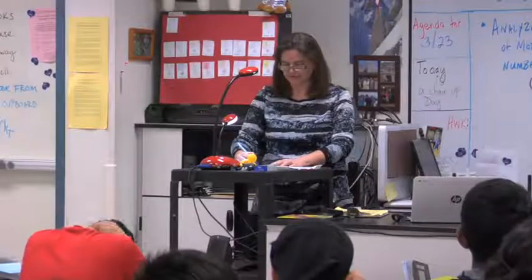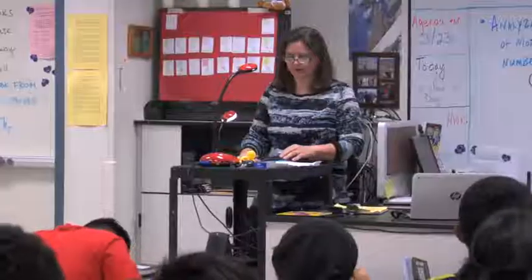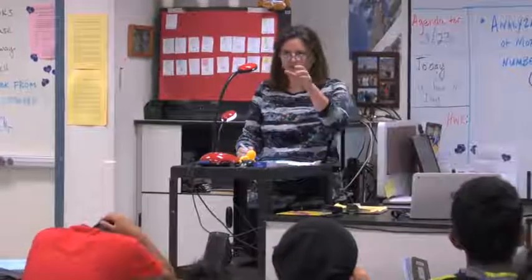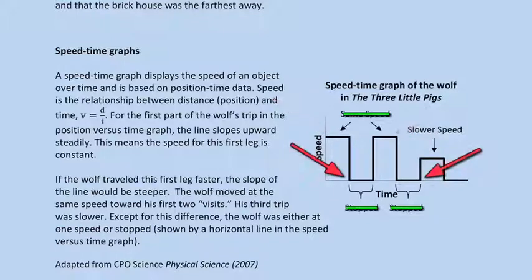So up here it says the word 'same speed.' But what if I just said — pretend those labels never existed? It's making this harder. This is not just to Antonio but to all of you guys: how do you know that this means they're moving at the same speed? And how do you know that this means they're stopped, without looking at the labels? You can't cheat and use the labels — you've got to use the actual graph. Think about that with your partner.